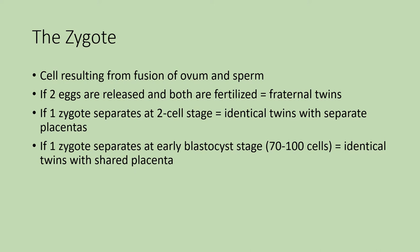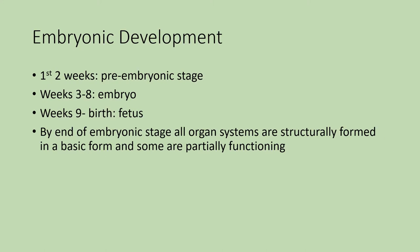If that zygote separates a little bit later in what we call the early blastocyst stage — where you have between 70 and 100 cells — they are still identical twins, but in this case they will share a placenta instead of having separate ones. So it depends on when the separation occurs for identical twins as to whether they share a placenta or have separate ones. Embryonic development is divided into stages: the first two weeks is the pre-embryonic stage, weeks three through eight is called the embryo stage, and from weeks nine to birth it is referred to as the fetus.